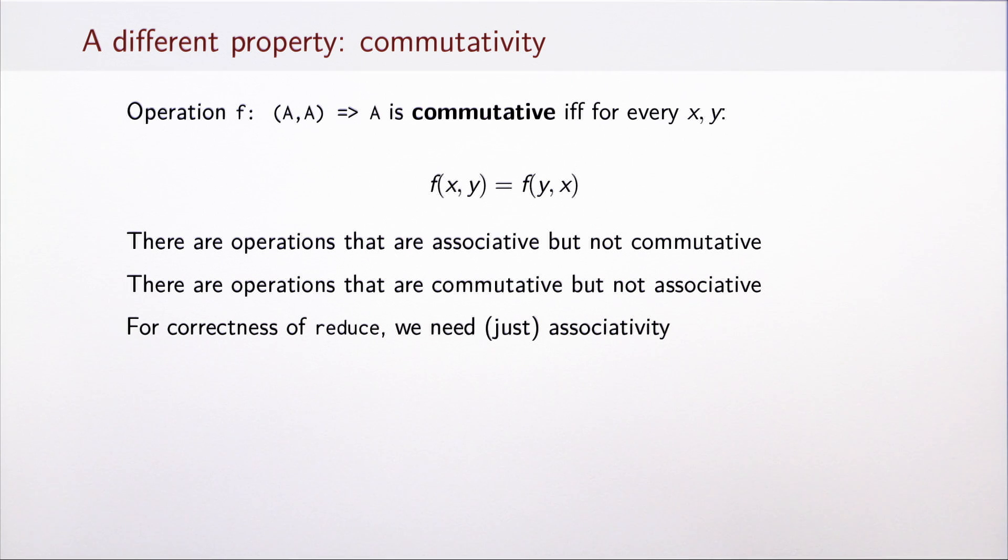When we discuss associative operations, it's important to differentiate associativity from commutativity. Commutativity just means that for a binary operation we can swap the order of the two operands. While there are operations that are both associative and commutative, in general these two properties are independent. There are associative but not commutative operations as well as operations that are commutative but not associative. Keep in mind that for correctness of reduce, what we need is precisely associativity.